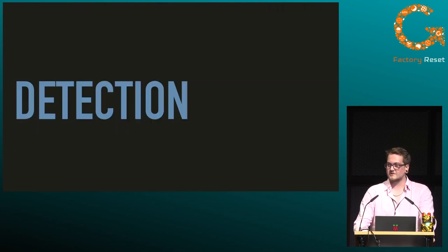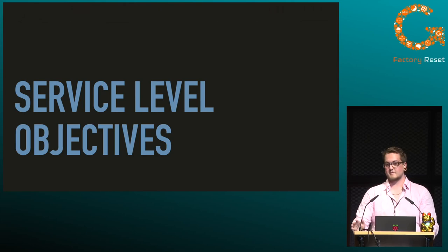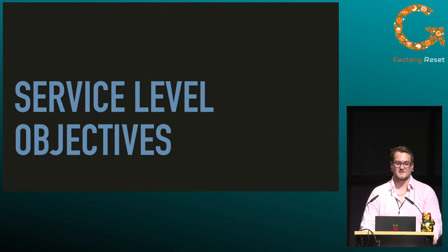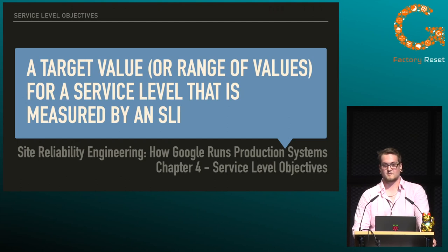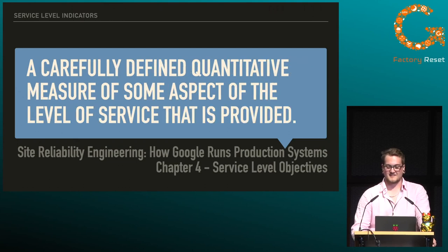So let's talk about how we actually detect those incidents — how we detect that something went wrong. We do this using service-level objectives, and every time a service-level objective is breached, we alert. But what's actually in a service-level objective? The Google SRE book says: a service-level objective is a target value or range of values for a service level that is measured by a service-level indicator. And a service-level indicator is a carefully defined quantitative measure of some aspect of the level of service provided.